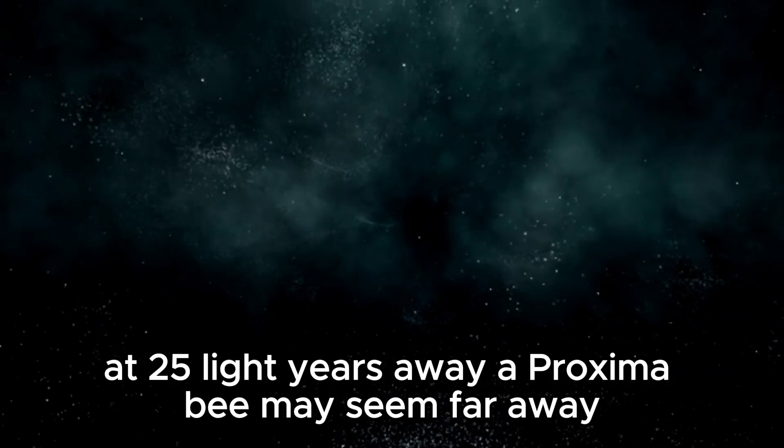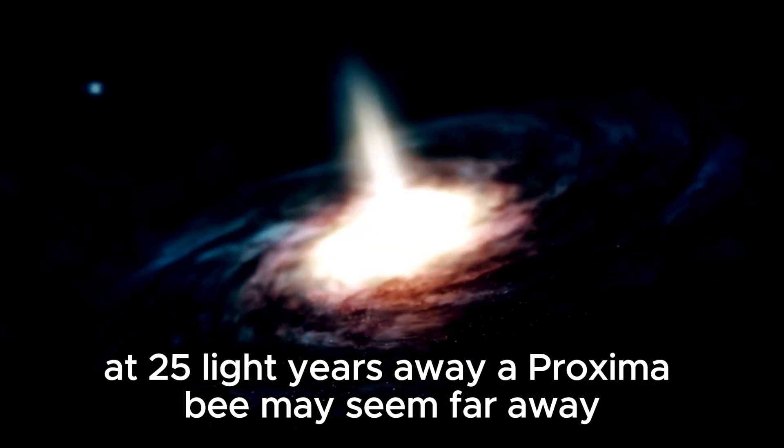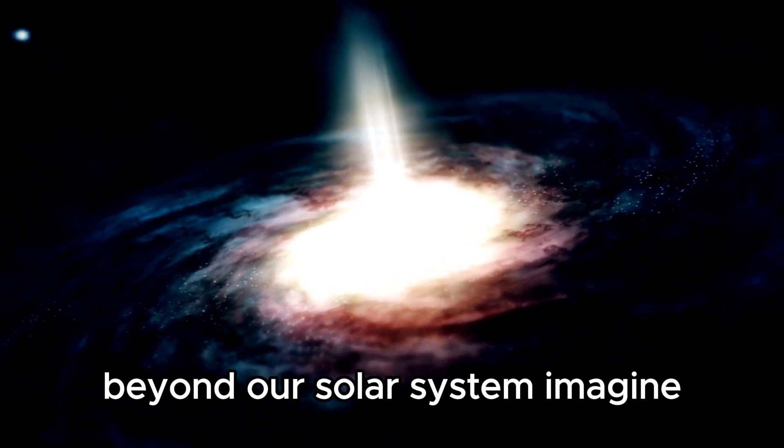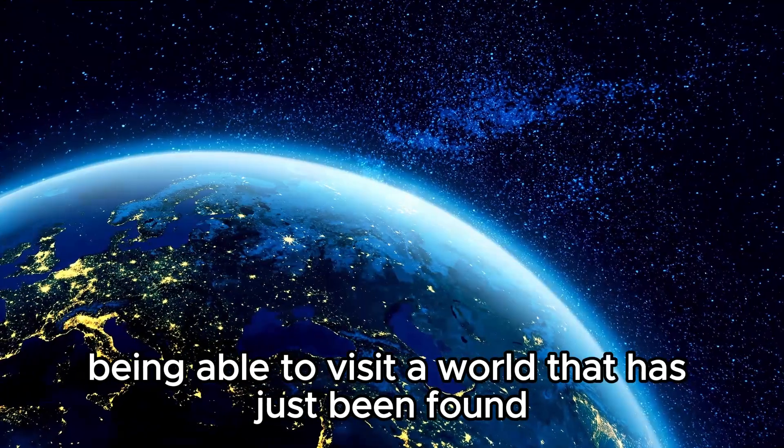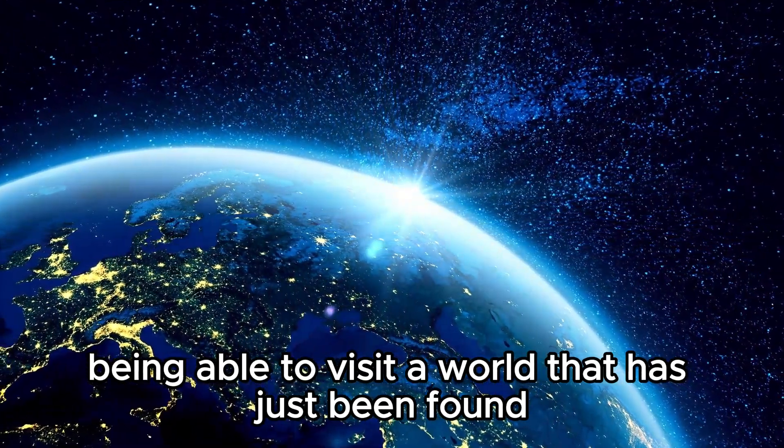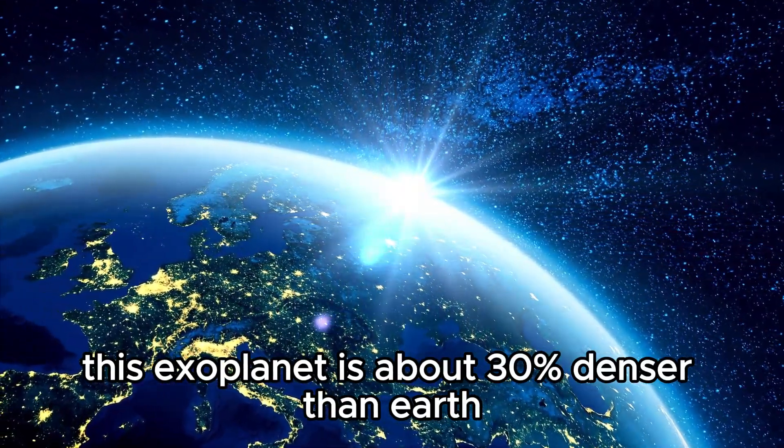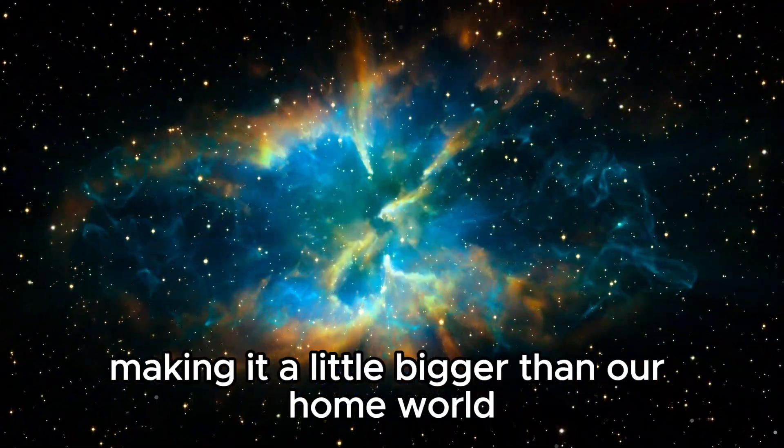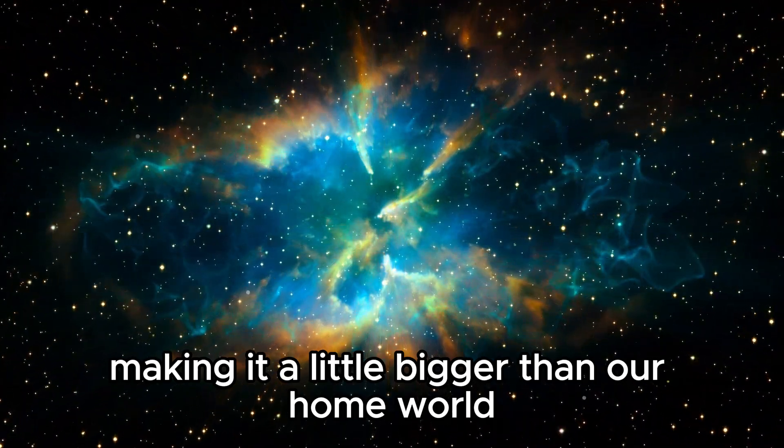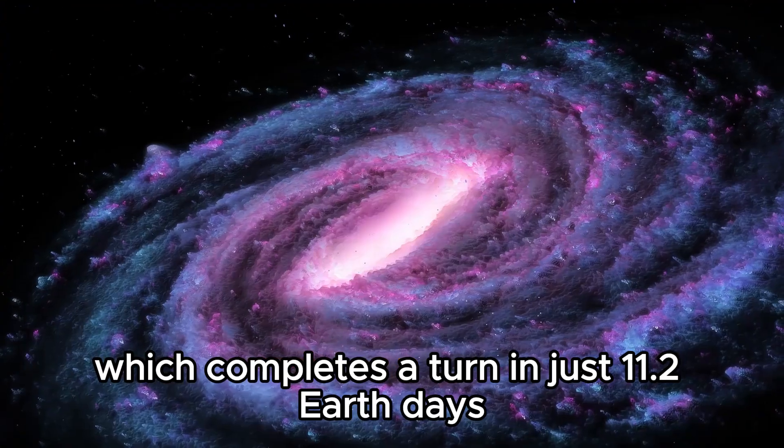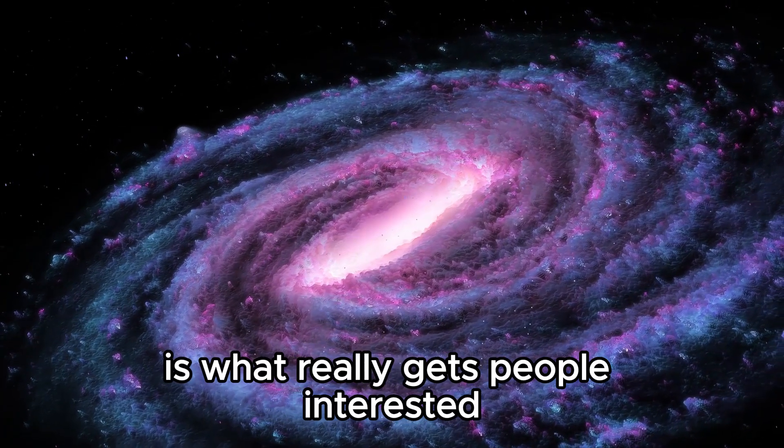At 25 light years away, Proxima b may seem far away, but it is actually one of our nearest friends beyond our solar system. Imagine being able to visit a world that has just been found that is so close to our own. This exoplanet is about 30% denser than Earth, making it a little bigger than our home world. Its very fast orbit, which completes a turn in just 11.2 Earth days, is what really gets people interested.